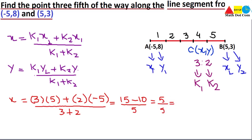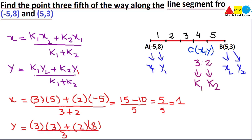Now for the y-coordinate: y = (k1·y2 + k2·y1) / (k1 + k2) = (3×3 + 2×8) / (3 + 2) = (9 + 16) / 5 = 25 / 5 = 5.